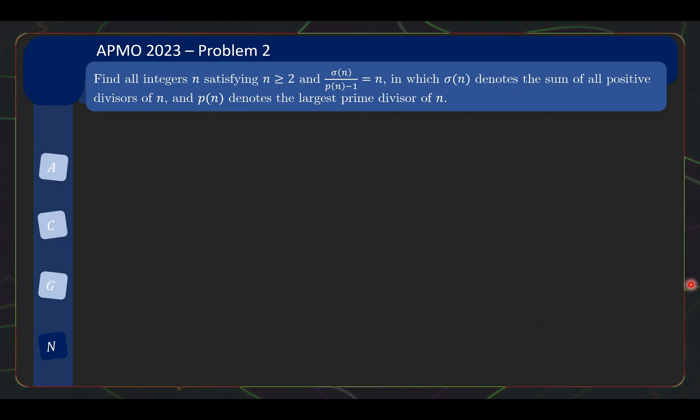Right now let us move on to problem 2 which is actually another fairly unique number theory problem. For this problem, we need to find all integers n satisfying n greater than or equal to 2 and this equation holds. So sigma n here is the sum of all positive divisors of n and then p(n) here is the largest prime divisor of n. So let me just rewrite this a bit. You need the following equation to hold. Sigma n equals to this multiple of n. When you are faced with a problem, again, the usual technique is try simple cases.